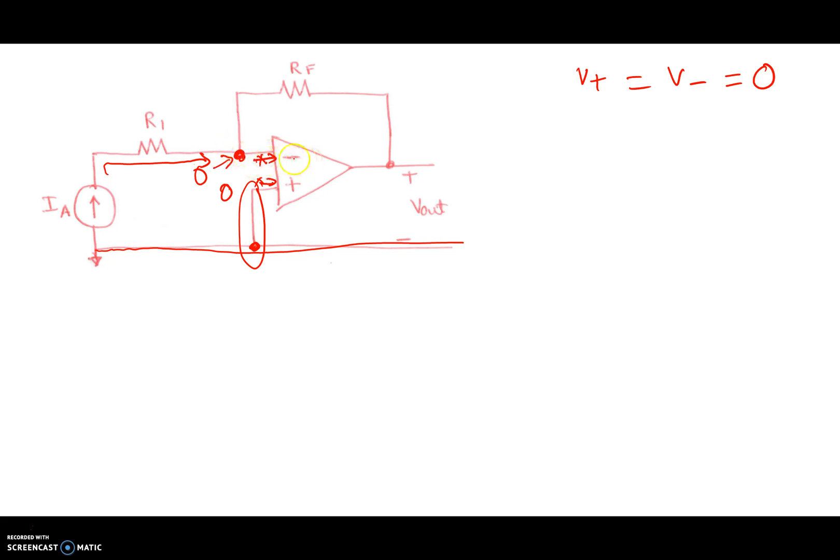Well, no current goes through the inverting end right here. Absolutely no current goes through there because of the ideal op-amp rule. So all of that current is actually going here. In other words, if I call this current I1 and I call this current I2, then we have I1 is equal to I2.